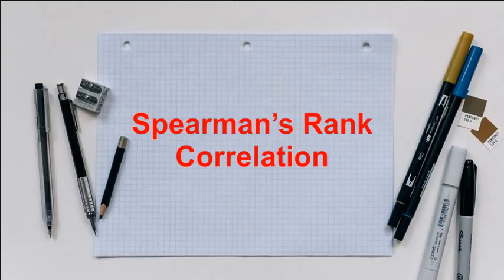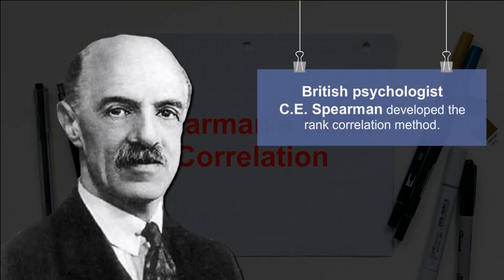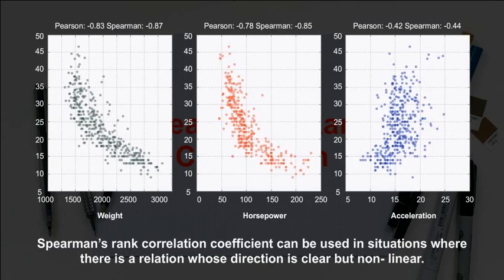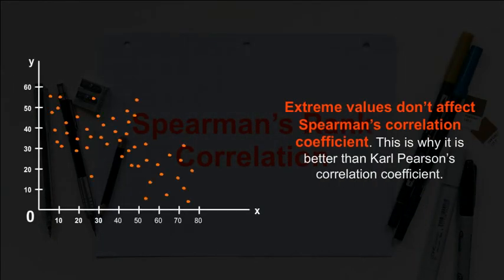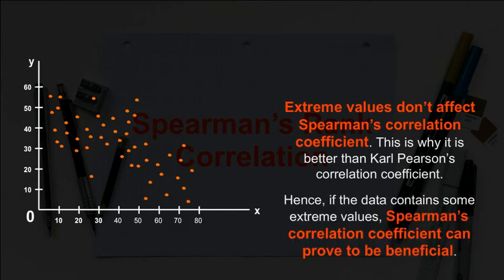British psychologist C.E. Spearman developed the rank correlation method. Spearman's rank correlation coefficient can be used in situations where the direction of the relationship is clear but non-linear. Extreme values do not affect Spearman's correlation coefficient, which is why it is considered better than Carl Pearson's correlation coefficient in such cases.